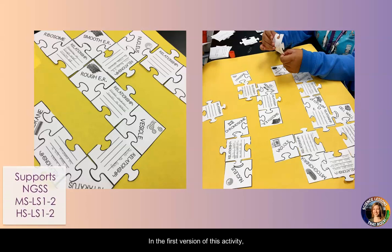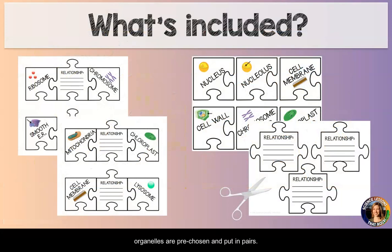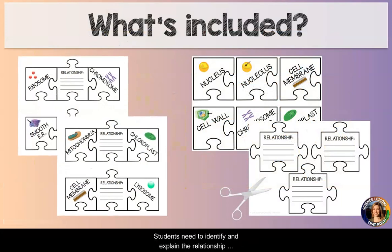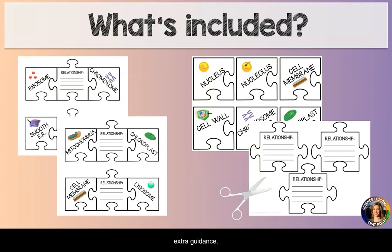In the first version of this activity, organelles are pre-chosen and put in pairs. Students need to identify and explain the relationship between the two organelles. This is a great option for middle school students or students who need some extra guidance.